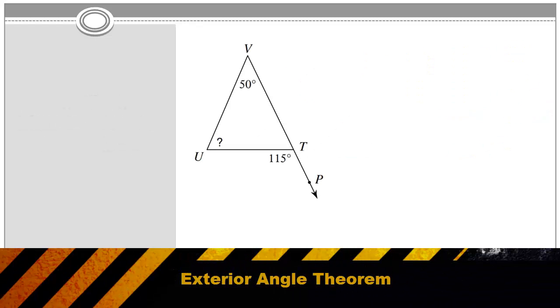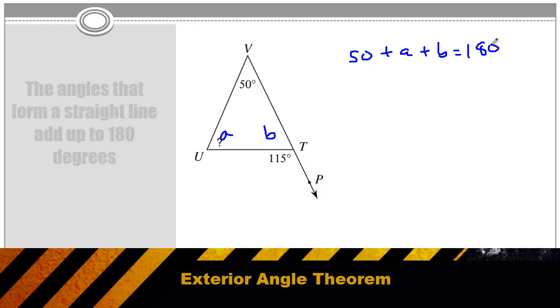You should also be aware of the exterior angle theorem. The exterior angle theorem is not so much a rule as it is a shortcut, because it really comes from combining two rules that are heavily tested on your exam. If I label the unknown angles in this triangle as a and b, I can write two equations.